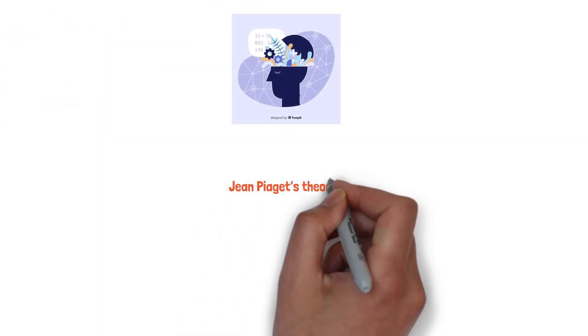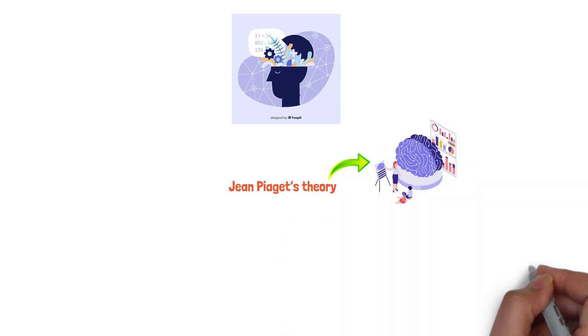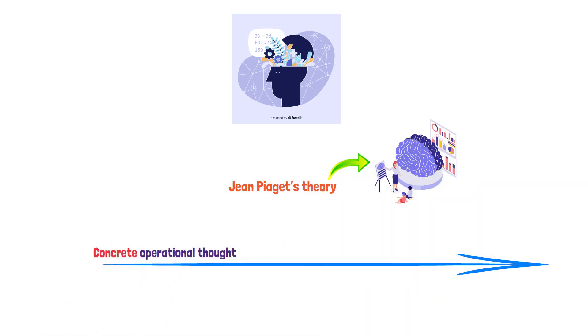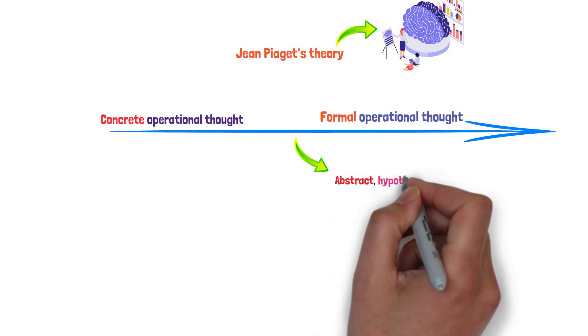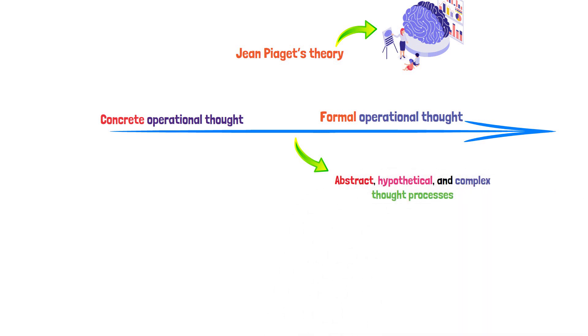In the cognitive realm, Jean Piaget's theory of cognitive development highlights the transition from concrete operational thought in childhood to formal operational thought in adolescence. This shift enables more abstract, hypothetical, and complex thought processes.